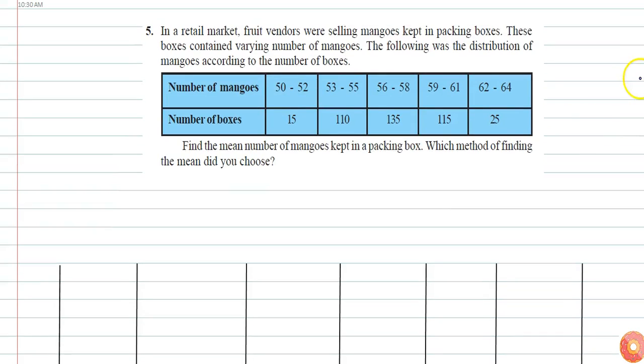In this question, we can see that the interval is not continuous. Since the first interval is 50-52 and the second interval is 53-55, there is a gap of one. So we had to adjust the limits.